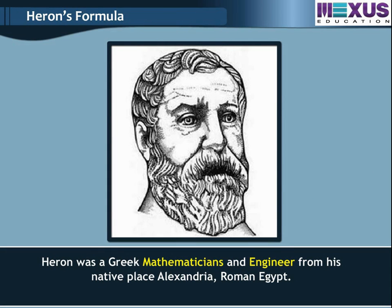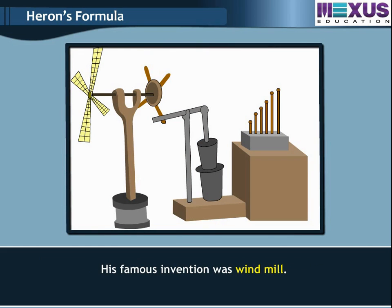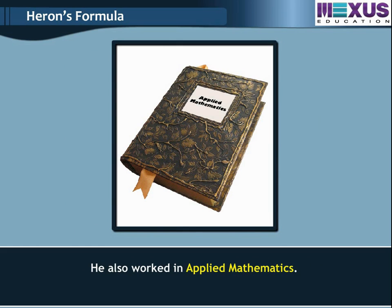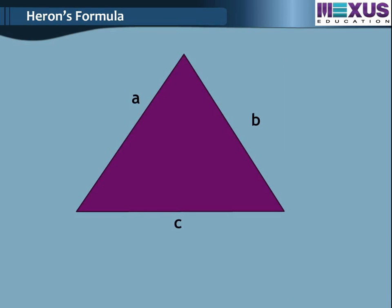Heron was a Greek mathematician and engineer from Alexandria, Roman Egypt. He was also known as Hero of Alexandria. He was born in 10 AD. His famous invention was the windmill. He also worked in applied mathematics. His works on mathematical and physical subjects are so numerous and varied that he is considered to be an encyclopedic writer. He derived the famous formula for the area of a triangle in terms of its three sides.